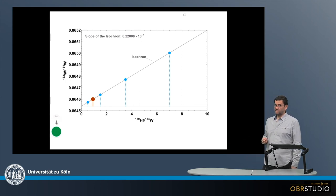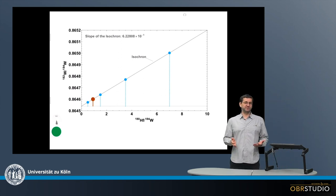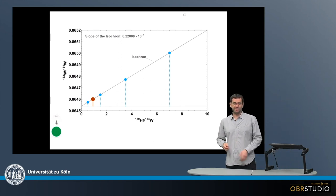This here is the 182 Hafnium decaying to 182 Tungsten system with a half-life of 8.9 million years. So clearly, a short-lived decay system.